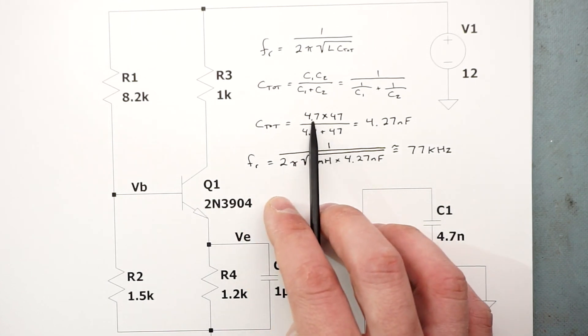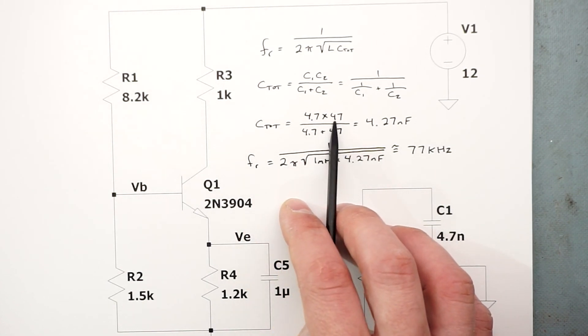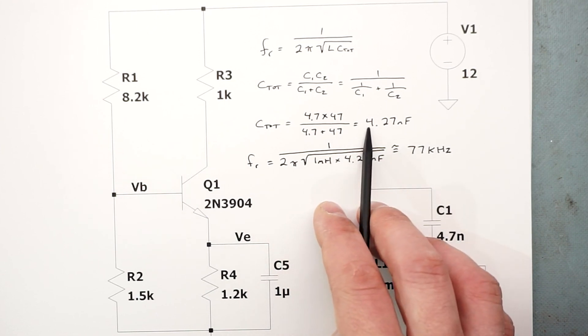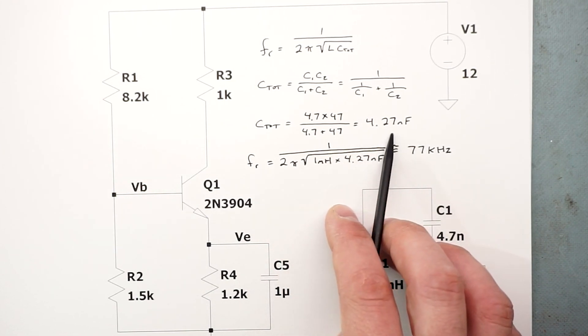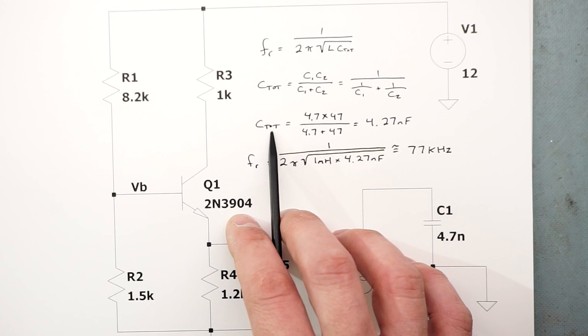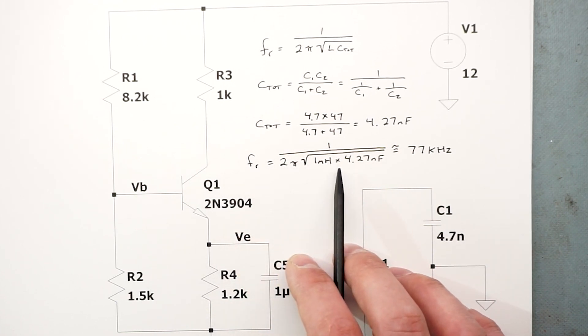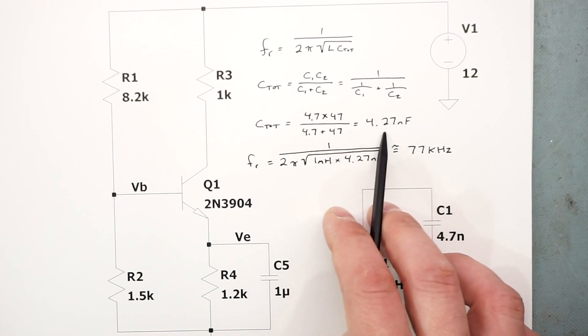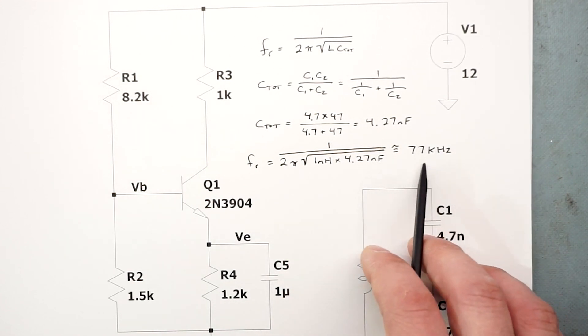The total capacitance is 4.7 nanofarads times 47 nanofarads over 4.7 plus 47, and that turns out to be 4.27 nanofarads. That value can be plugged back into our formula. One over two pi the square root of one millihenry times the capacitance we just calculated comes out to 77 kilohertz.